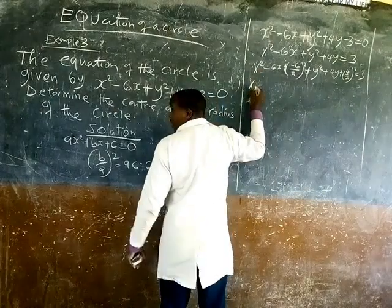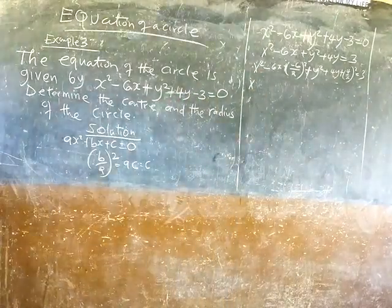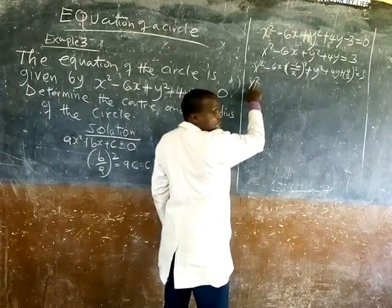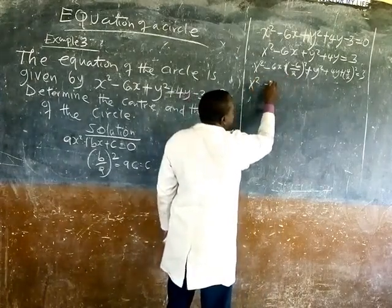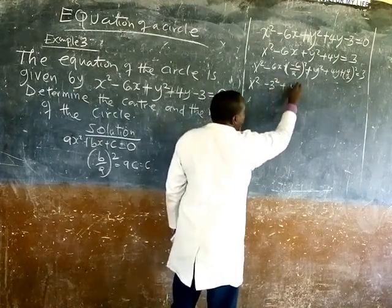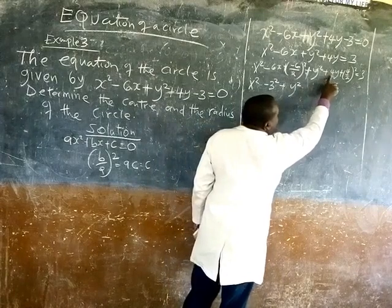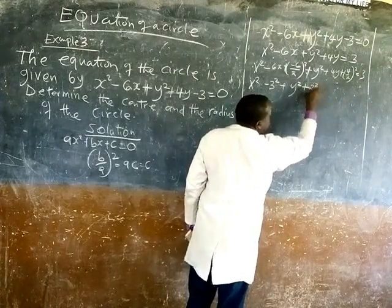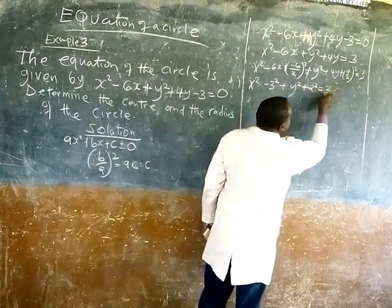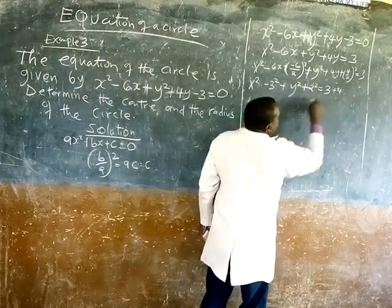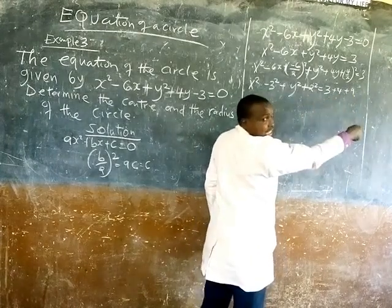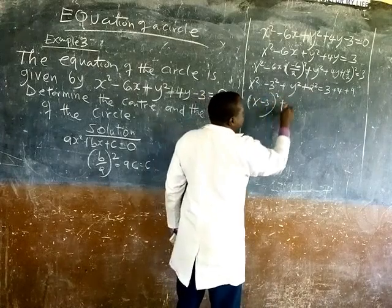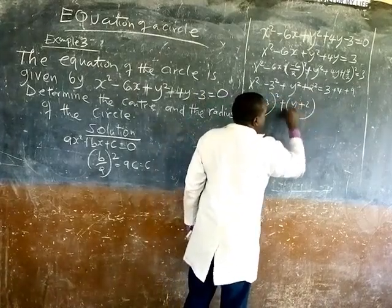We're going to have x square. We want x minus 3, this square is 3, and this square is 9. Plus y square, this is going to be 2. This square is 4. We add this one on that side. Now x minus 3 square plus y plus 2 square equal to 3 plus 4 plus 9, which is 16.